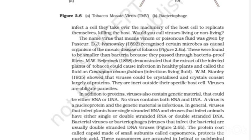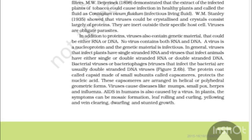Viruses are inert outside their specific host cells and are obligate parasites. In addition to proteins, viruses also contain genetic material that could be either RNA or DNA. No virus contains both RNA and DNA. A virus is a nucleoprotein and the genetic material is infectious. In general, viruses that infect plants have single-stranded RNA, and viruses that infect animals have either single or double-stranded RNA or double-stranded DNA. Bacterial viruses or bacteriophages — viruses that infect bacteria — are usually double-stranded DNA viruses. The protein coat called capsid, made of small subunits called capsomeres, protects the nucleic acid. These capsomeres are arranged in helical or polyhedral geometric forms. Viruses cause diseases like mumps, smallpox, herpes and influenza. AIDS in humans is also caused by a virus. In plants, the symptoms can be mosaic formation, leaf rolling and curling, yellowing and vein clearing, dwarfing and stunted growth.